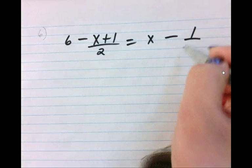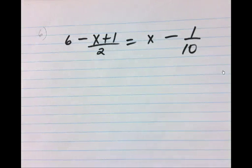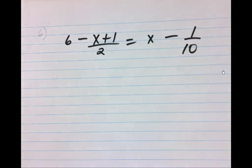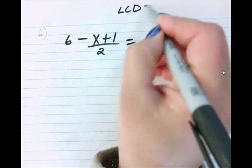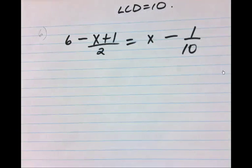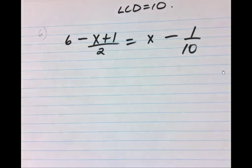So here we've got 6 minus (x+1)/2 equals x minus 1/10. Now we've talked about the idea of lowest common denominators. So what is the lowest common denominator? In this case we've got a 2 in the denominator and a 10 in the denominator, so we're going to use 10. That is our LCD, it's 10. Why is 10 our LCD? Because 10 is the smallest number that both 2 and 10 go into.